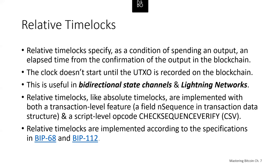Relative time locks, like absolute time locks, are implemented with both a transaction-level feature and a script-level opcode. The transaction-level relative time lock is implemented as a consensus rule on the value of nSequence, a transaction field set in every transaction input. The script-level relative time lock is implemented with the OP_CHECKSEQUENCEVERIFY (CSV) opcode. These relative time locks are implemented according to Bitcoin Improvement Proposals BIP68 (relative lock-time using consensus-enforced sequence numbers) and BIP112 (OP_CHECKSEQUENCEVERIFY).